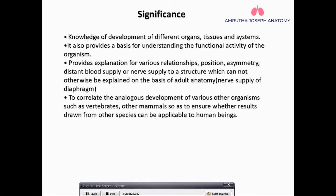Embryology also provides an explanation of the relationships of structures. For example, the stomach is located just posterior to the liver, or you can say the liver is anterior to the stomach. Why is the relationship like that? How did that relation evolve?